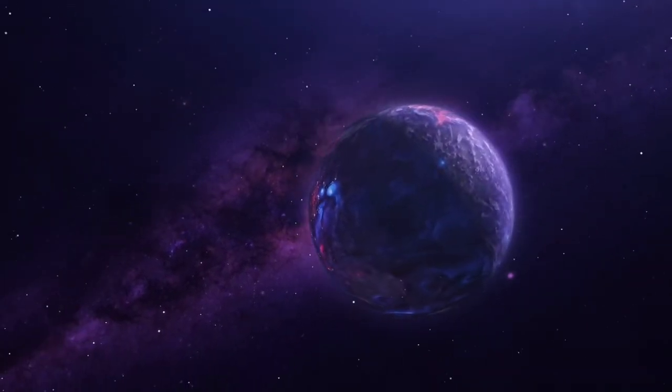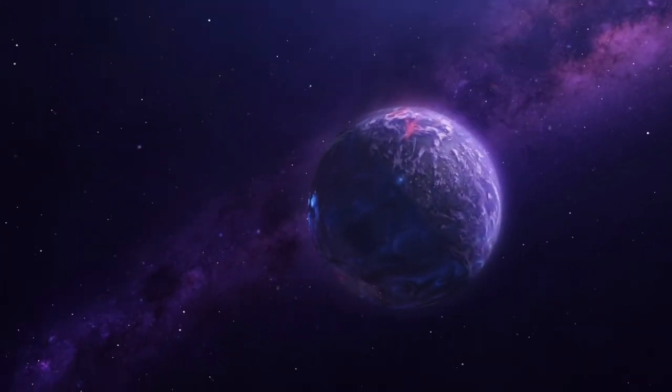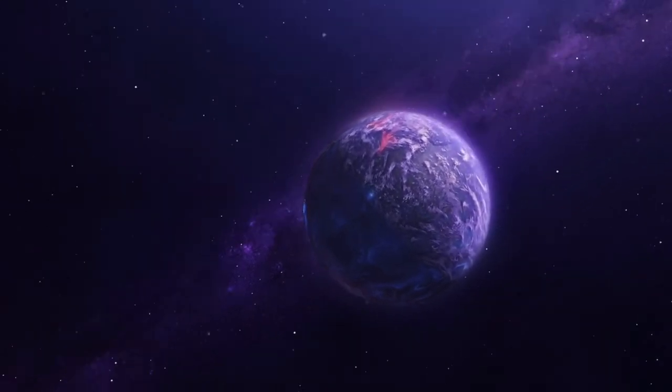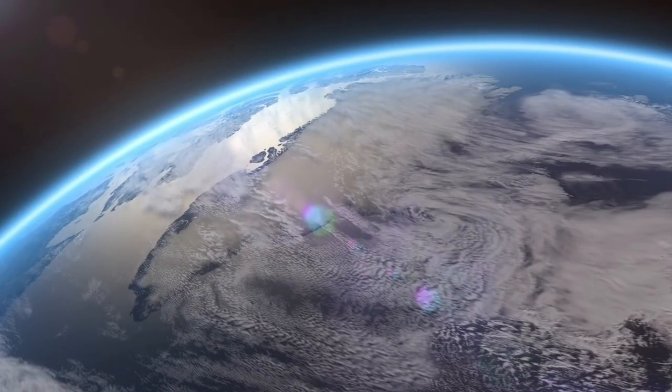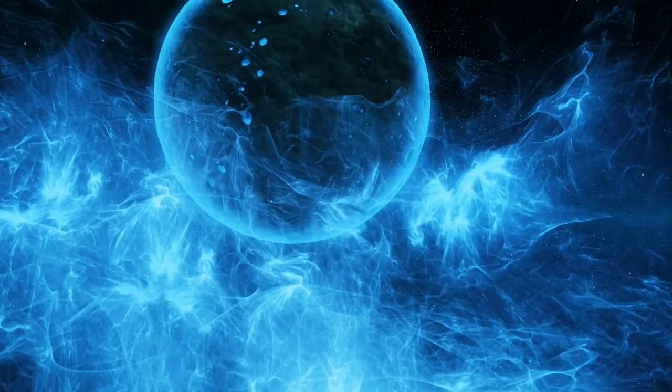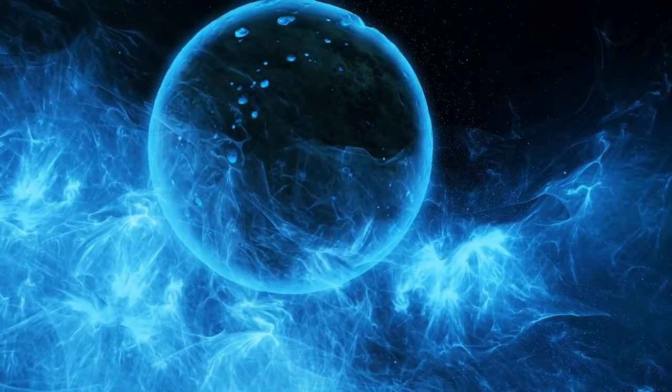Other exoplanet types identified by Kepler include super-Earths. They're more massive than Earth, yet lighter than ice giants like Neptune and Uranus, and can be made of gas, rock, or a combination of both.